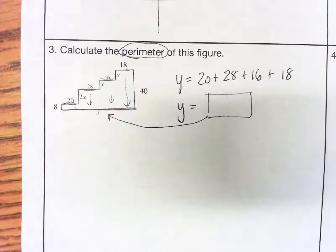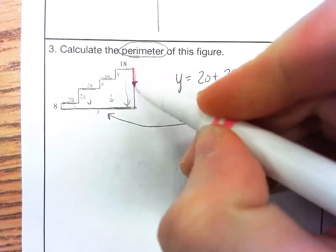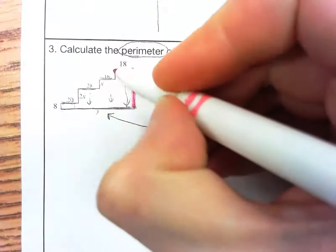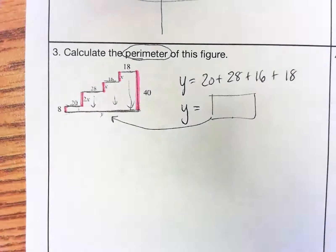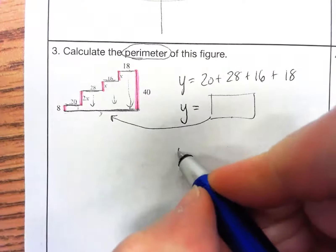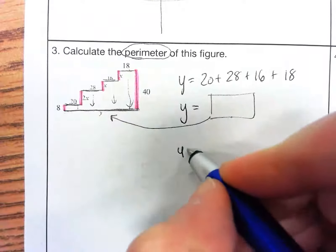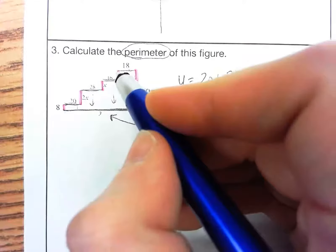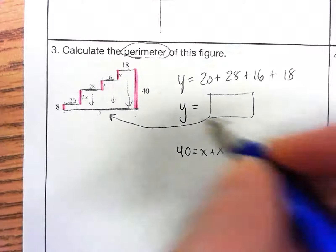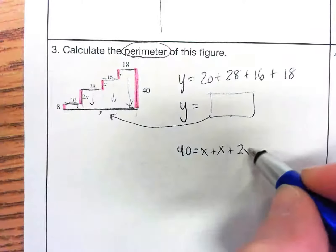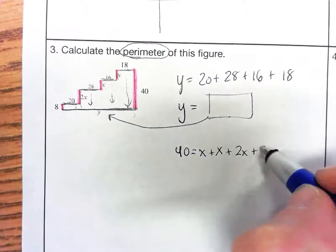Then to find our x's, I'm going to use a different color here. We know that 40, that whole side, is equivalent to this little piece plus this piece plus this piece plus this piece. So our equation there is going to be 40 equals this piece x plus this piece x plus this piece 2x plus this piece, which would be 8.